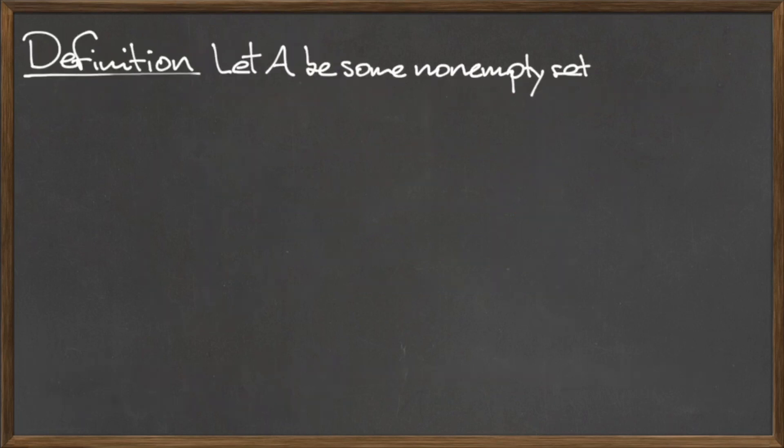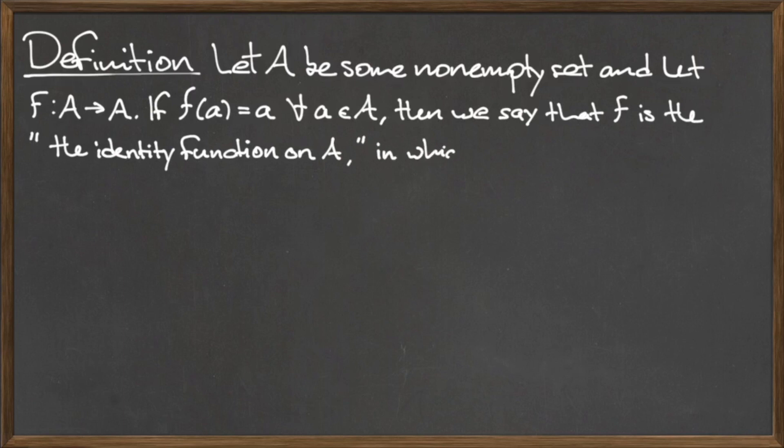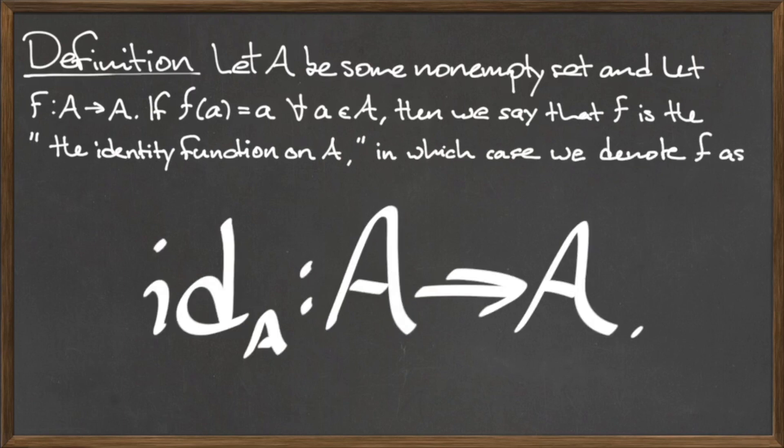Let A be some non-empty set, and let f be a function from A to A. If f(a) = a for all elements a in the set A, then we say that f is the identity function on A, which we denote as id_A.